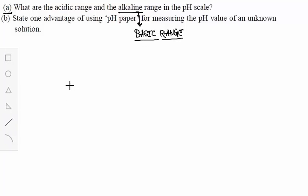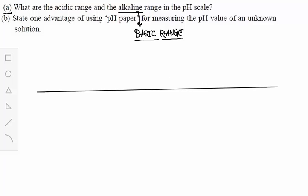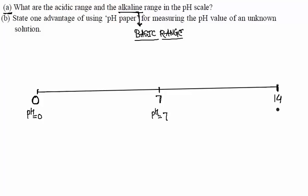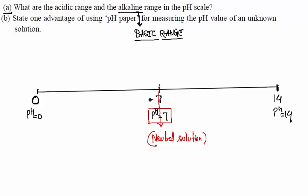Let me draw the scale. Here is 0 on one end, 7 in the middle, and 14 on the other end. So pH equals 0, pH equals 7, and pH equals 14. If pH is 7, that means you have a neutral solution.